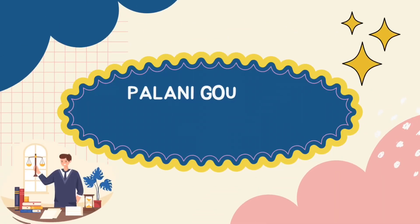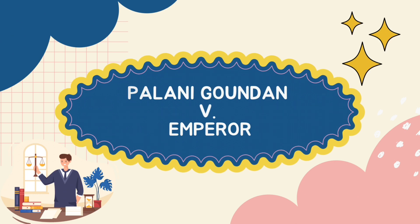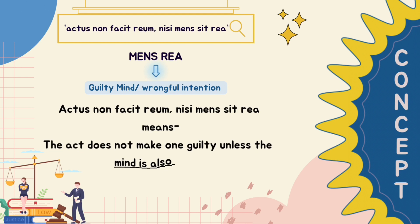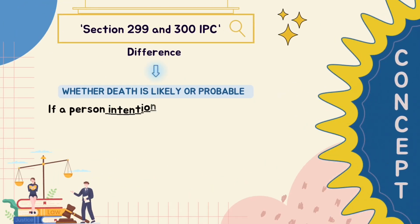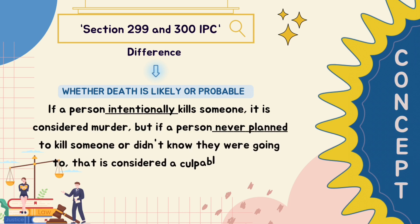Hi guys, in this video I'll discuss an important case law of IPC: Palani Gundan versus Emperor. This case is based on the concept of mens rea and the difference between Section 299 and 300 of IPC, which is culpable homicide and murder. The difference is based upon the fact that whether there was an intention to kill or not.